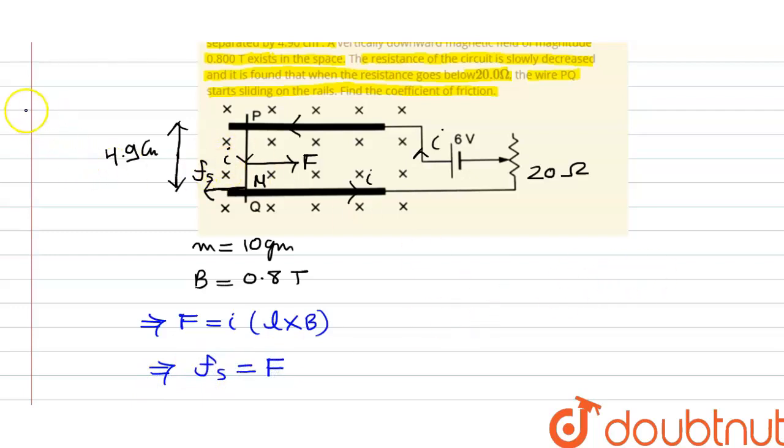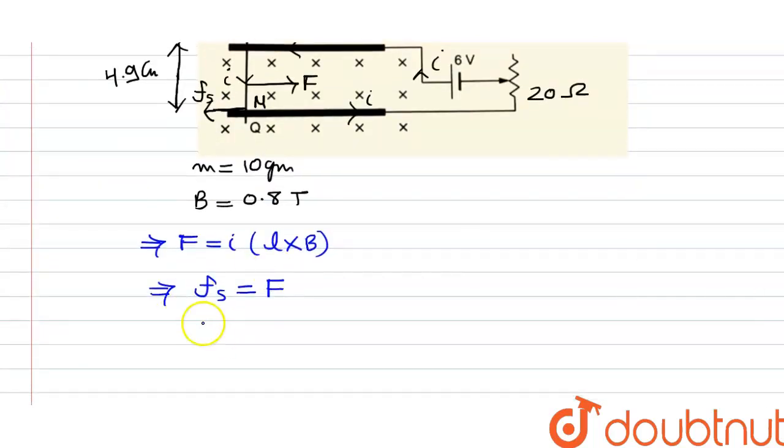So what will be the friction force? We all know that friction force is given by μ multiplied by N, where N is equal to mg.